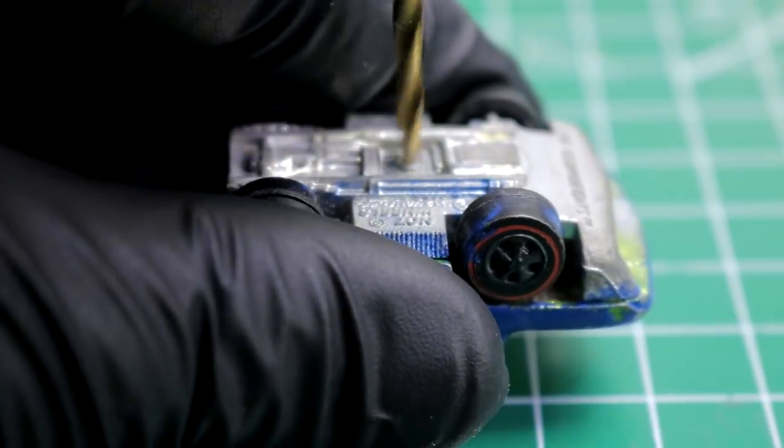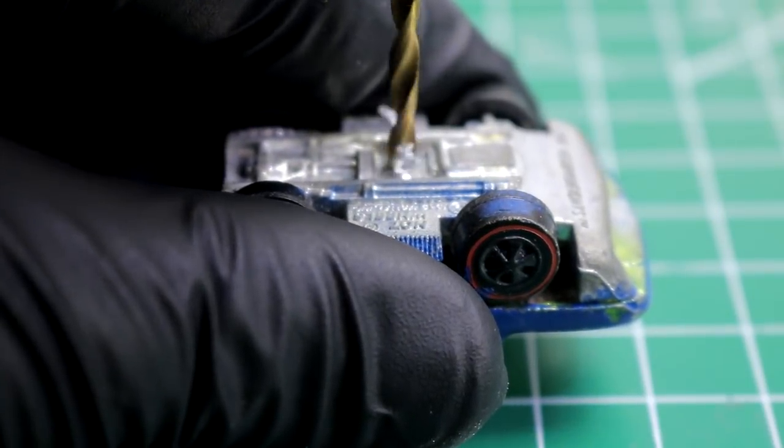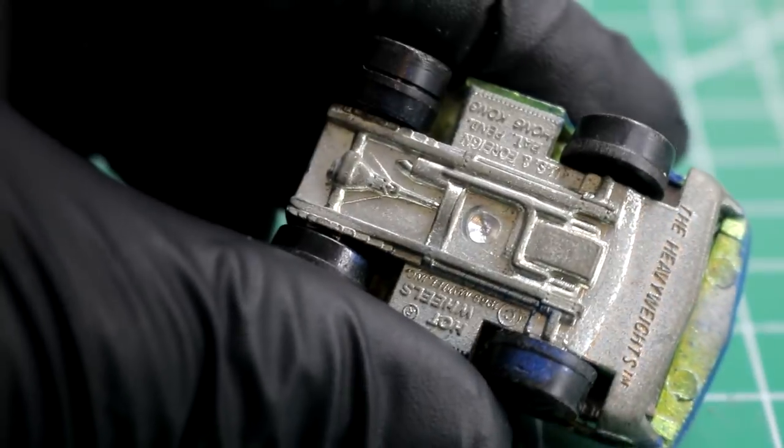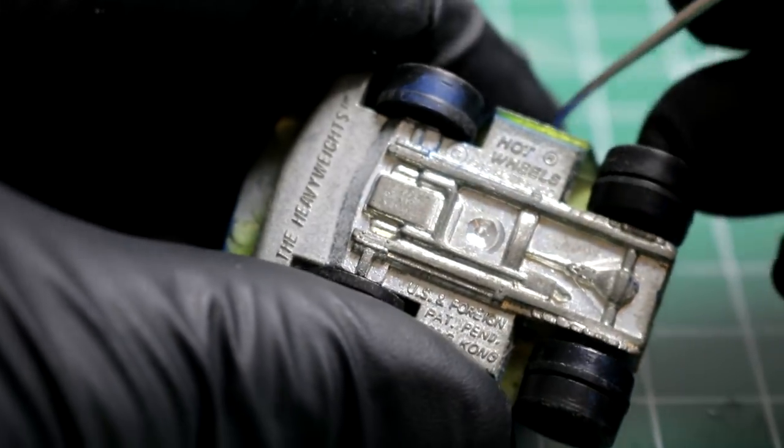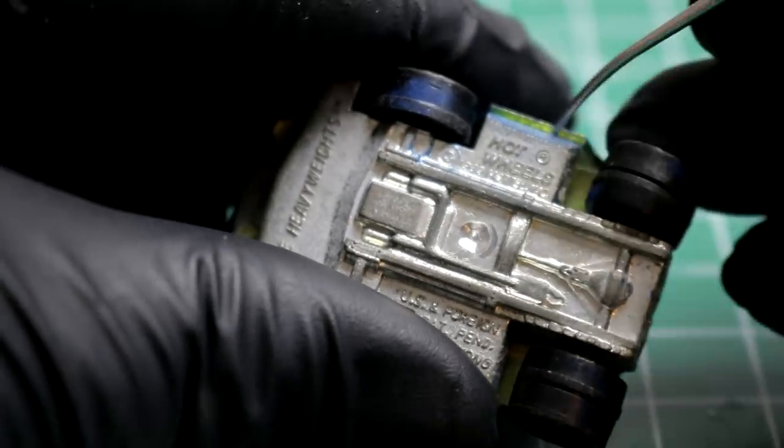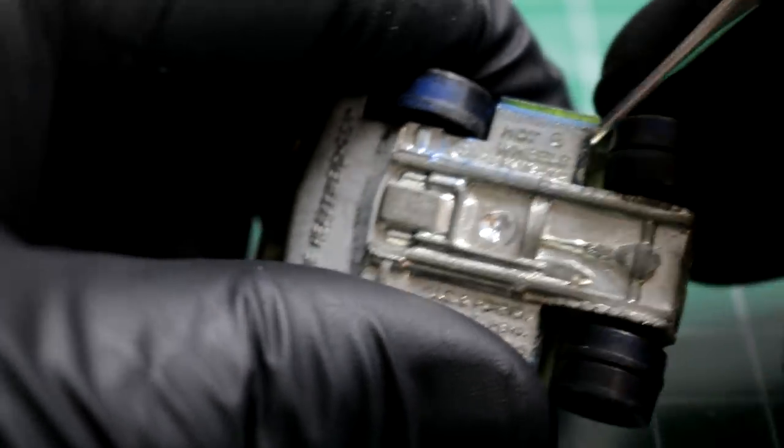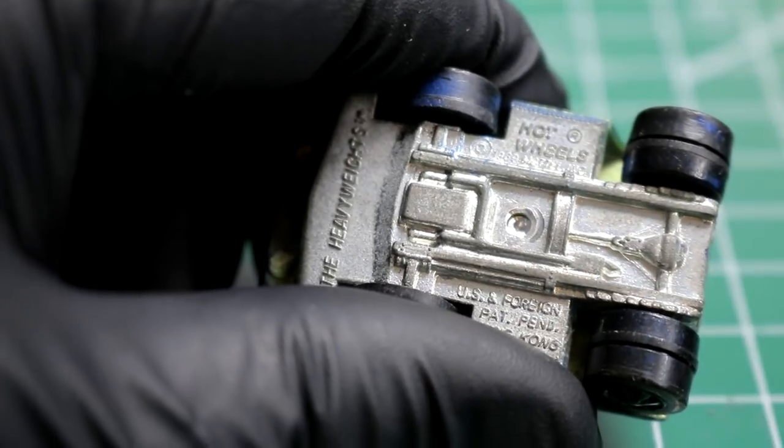And then I move up to a slightly larger drill bit, and then we'll just drill out the post carefully until the top comes off and we're able to get the car apart. I should be able to just pry here nicely, like so. Yes, very nice.